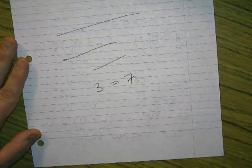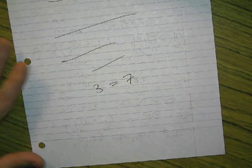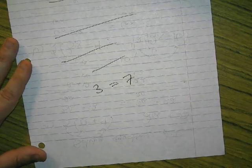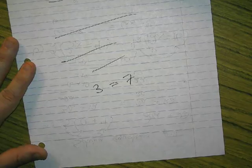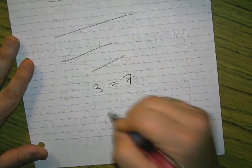Is that true ever? Is there anything you can plug in to make 3 equal to 7? Right? Not unless we get like some quantum infinite physics or something, or nothing makes sense, or just, you know, chemistry. If it ever is untrue, then what's my answer?